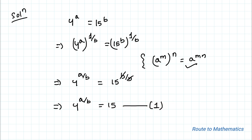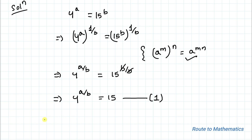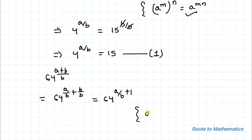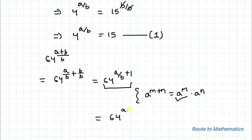We are asked to find the value of 64 to the power (a plus b) divided by b. I can rewrite this exponent as a/b plus b/b, which is a/b plus 1. So the expression becomes 64 to the power (a/b plus 1). Using the rule a^(m+n) = a^m × a^n, this becomes 64 to the power a/b, multiplied by 64.